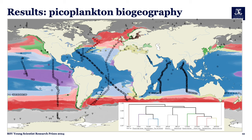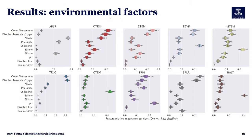The picoplankton communities in the Baltic Sea were distinct from those in other ocean regions, likely due to the Baltic Sea's unique brackish environment. Temperature, oxygen, and nutrient concentration were the primary factors determining the composition of these provinces, though their relative importance varied by province. For example, in the Baltic Sea, salinity was the most important environmental factor distinguishing this province from the others — as shown by the bars here, which represent the importance of each environmental variable in distinguishing between groups.